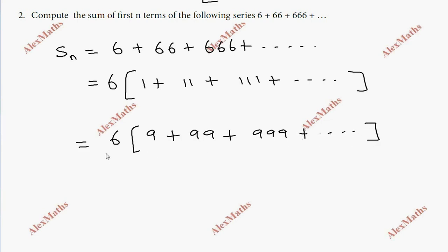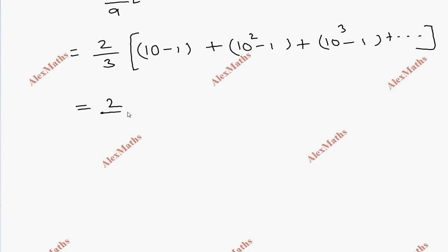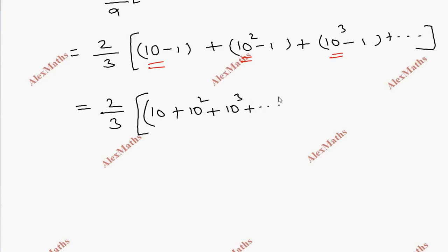We rewrite: 9 = 10 − 1, 99 = 10² − 1 = 100 − 1, 999 = 10³ − 1. So the series becomes (2/3) × [(10 + 10² + 10³ + ... ) − (1 + 1 + 1 + ... n times)]. This gives (2/3) × [geometric sum of 10 terms] − n.